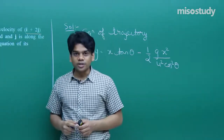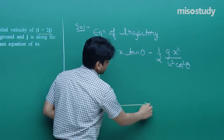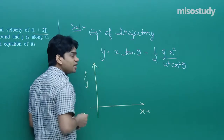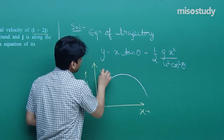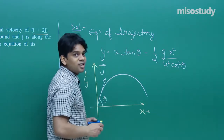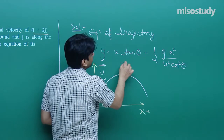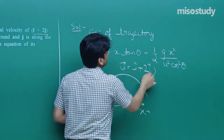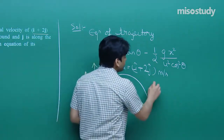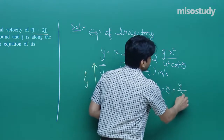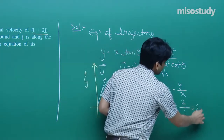The initial velocity is i + 2j. Let me draw: this is the y-axis, this is the x-axis. The velocity vector makes an angle θ with the horizontal. To find θ, we note tan θ = y-component / x-component = 2/1 = 2. So tan θ = 2.